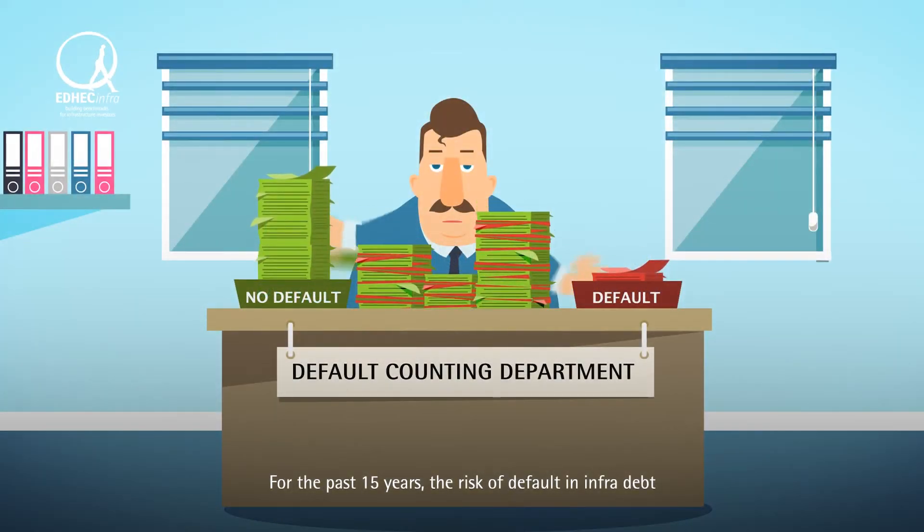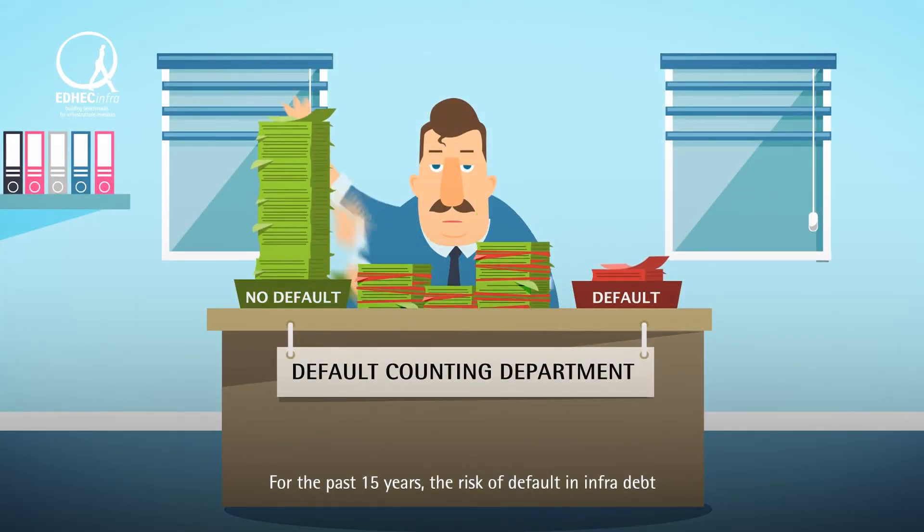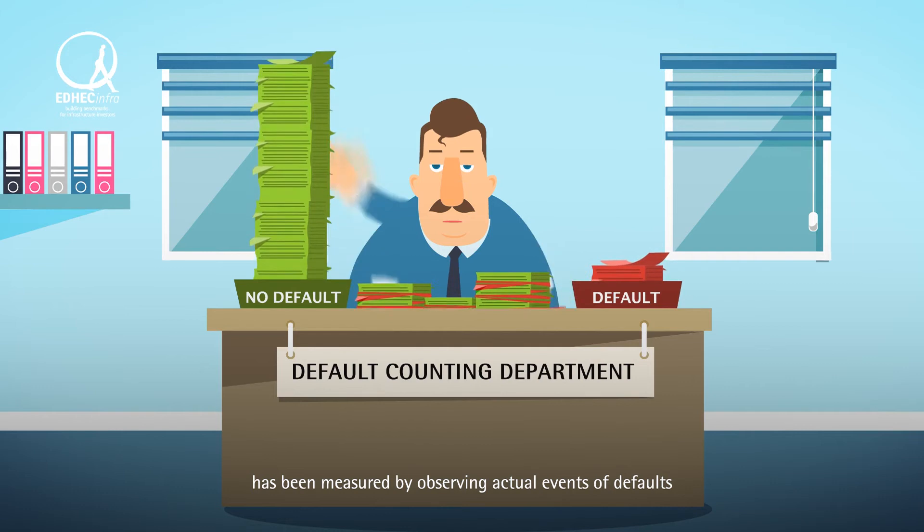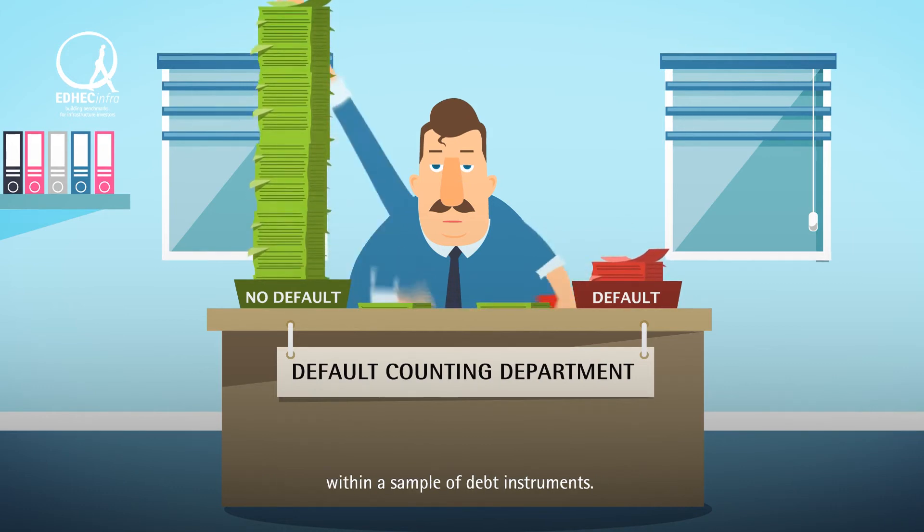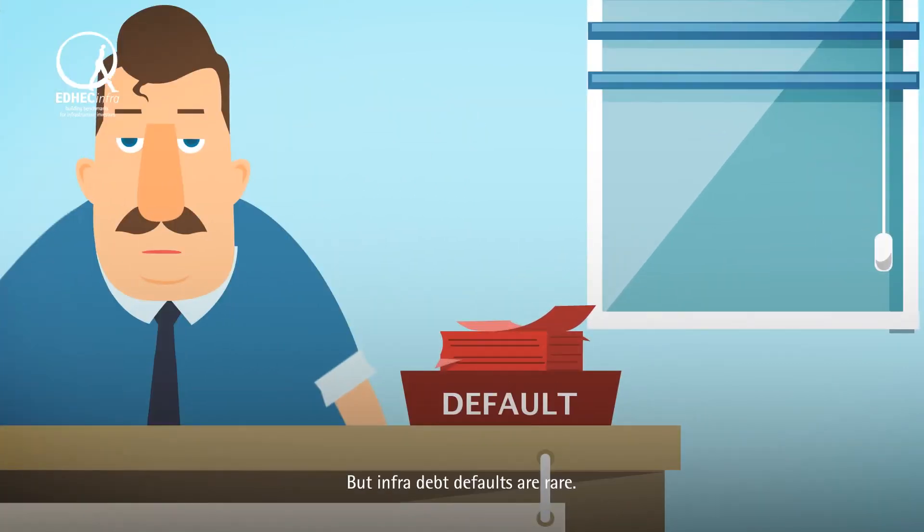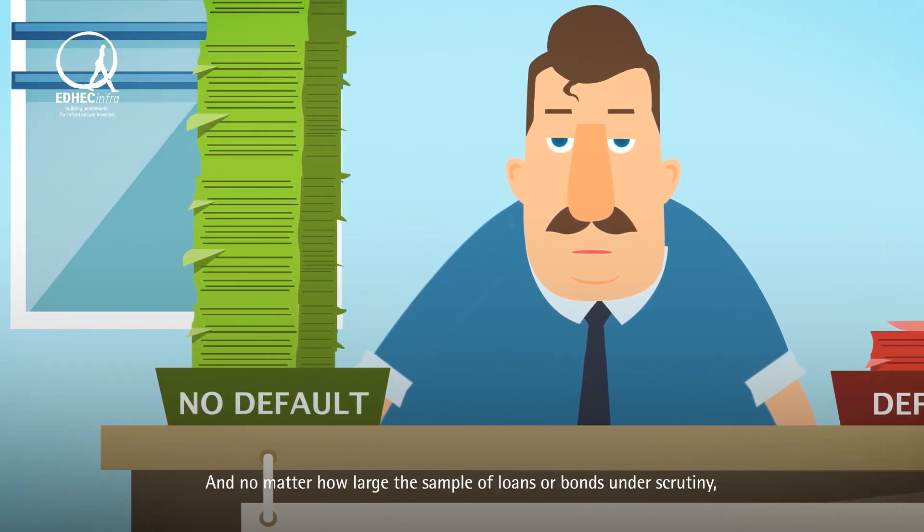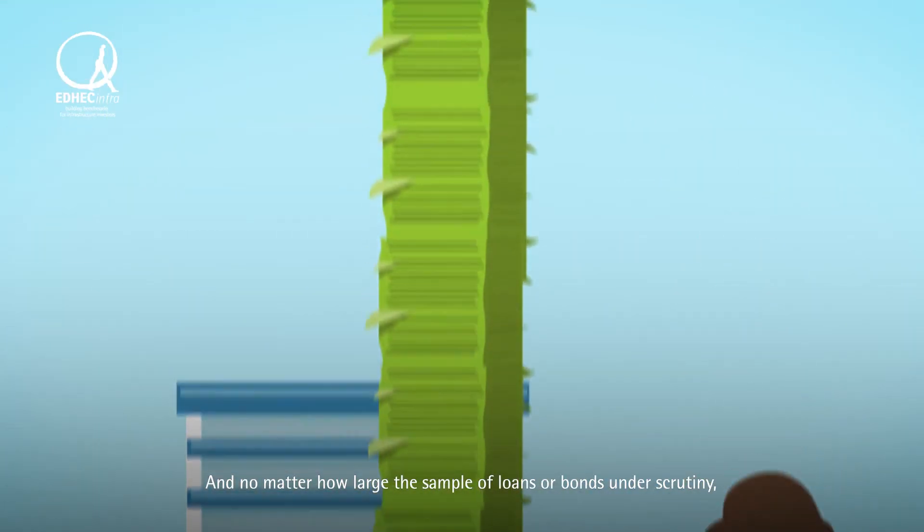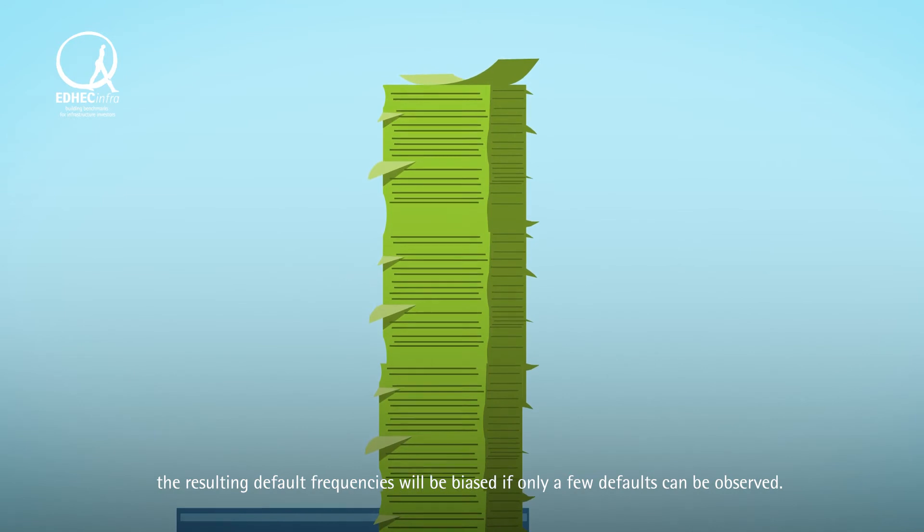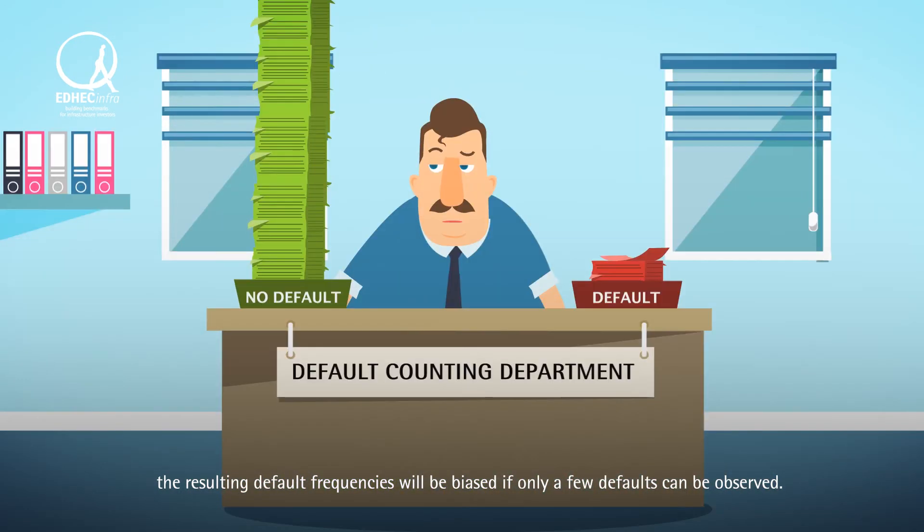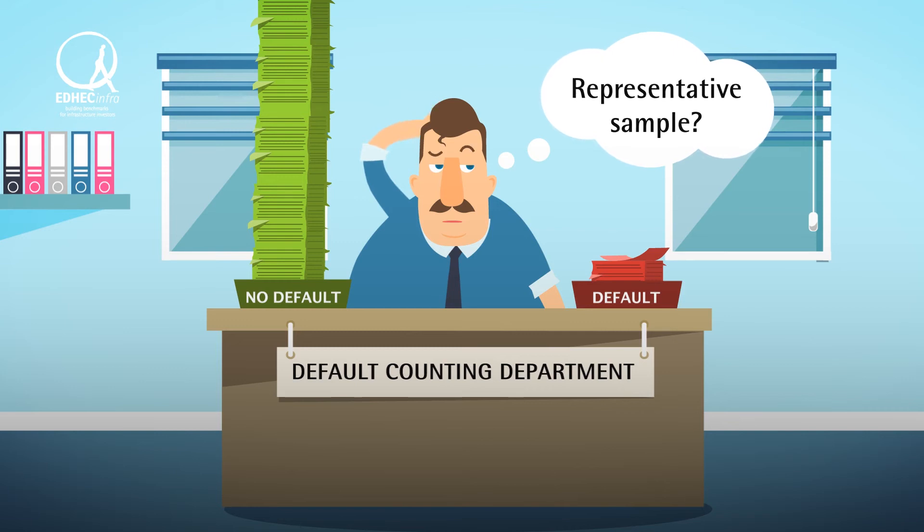For the past 15 years, the risk of default in infradebt has been measured by observing actual events of defaults within a sample of debt instruments. But infradebt defaults are rare, and no matter how large the sample of loans or bonds under scrutiny, the resulting default frequencies will be biased if only a few defaults can be observed.